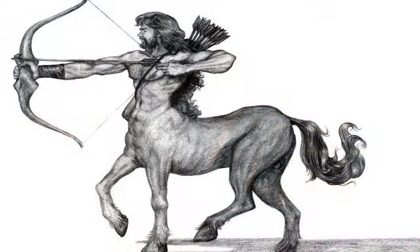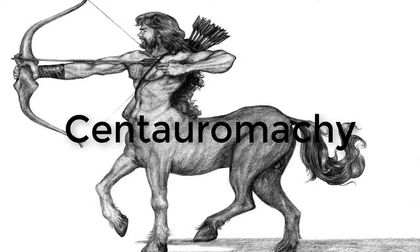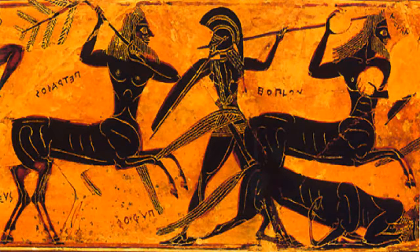While there have been some rather famous individual centaurs like Chiron or Pholos, the thing centaurs are most known for is the so-called Centauromachy. The main tribe of centaurs really didn't get along with a tribe of men called the Lapiths. The war that ensued between these two was called the Centauromachy — an epic battle in which several heroes participated and in which the majority of centaurs were killed off.